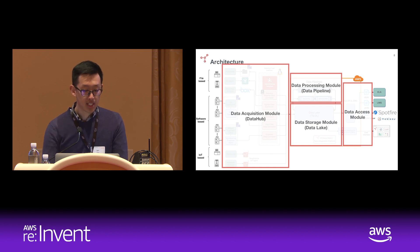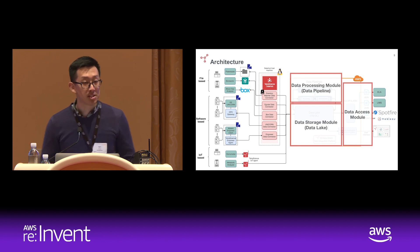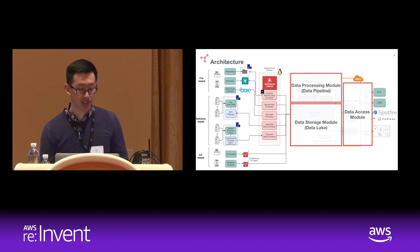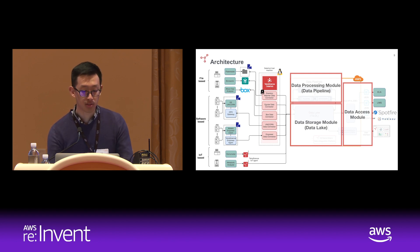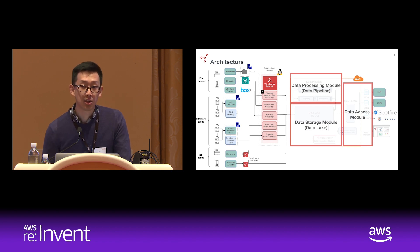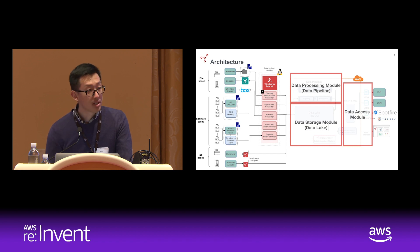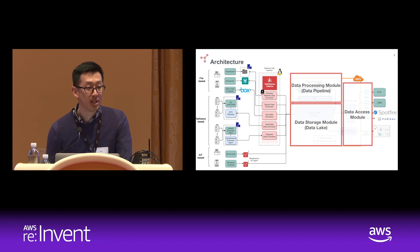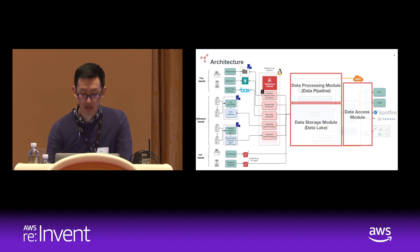The data acquisition module is centered around a concept called the data hub — an agent you can install in your local network. It contains all the connectors tailored for different kinds of data sources: a connector that watches your directory, one that watches your SharePoint folder, one that watches your Box folder, a connector that talks to GE's protein purification system, a connector that talks to Waters Empower. As you add more data sources, there will be a library of connectors we're building out. The data processing module consists of data pipelines that take incoming raw instrument data and turn them into structured data. The data access module then opens that data to your software for consumption.